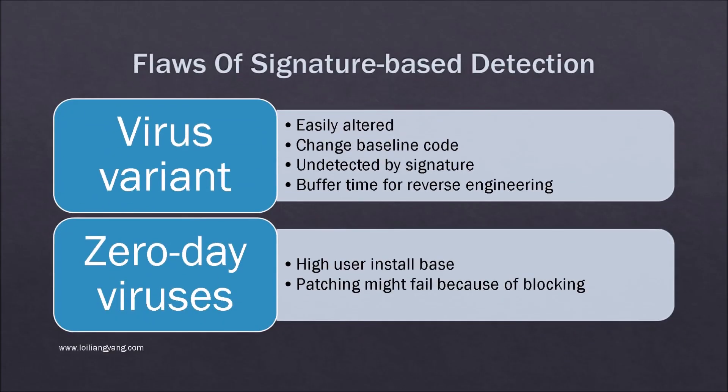One of the major flaws of signature-based detection is that it can sometimes be difficult to detect a well-known virus variant. By altering certain sections of the code of a well-known virus, you can easily bypass antivirus detection because the signature simply cannot match. Creating a virus variant is very fast because you already have the baseline code to work with. This means signature-based antivirus cannot detect brand new viruses, and this buffer time means many users will be affected before a signature is available. Once the virus has taken effect, there is a good chance the antivirus will not be able to update to the latest security signature list because of blocking from the virus.